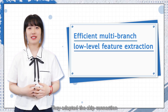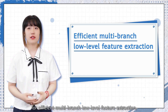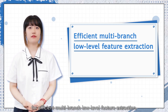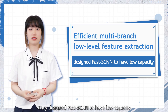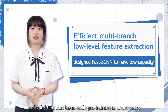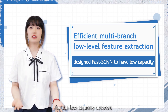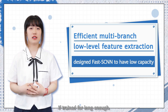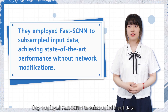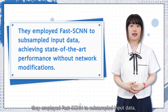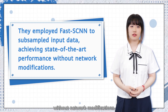They adapted the skip connection and proposed a learning-to-down-sample module for efficient multi-branch low-level feature extraction. They designed FAST-SCNN to have low capacity and validated that large-scale pre-training is unnecessary for the low-capacity network if trained for long enough. Moreover, they employed FAST-SCNN to subsample input data, achieving state-of-the-art performance without network modifications.